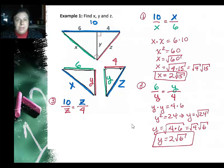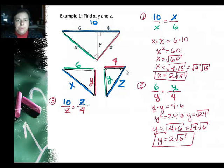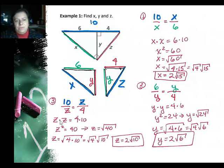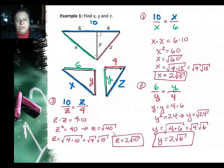Now we'll look for side Z. I have side Z on the lower-right triangle and on the original triangle. On the lower right it's a hypotenuse — the blue side — and on the original triangle it's a red side, so I'll use the red and blue sides for my proportion. Starting with the original triangle: ten is to Z as Z is to four. Cross multiplying gives Z squared equals forty. Z equals the square root of forty. Four goes into forty, so forty equals four times ten, giving Z equals two times the square root of ten.